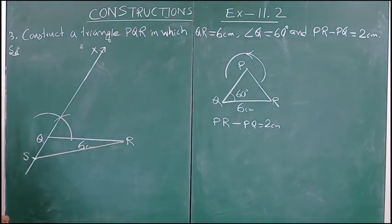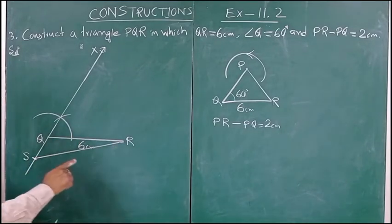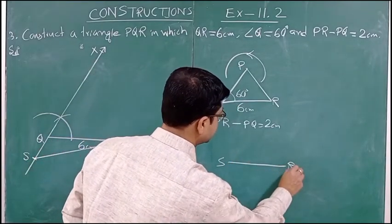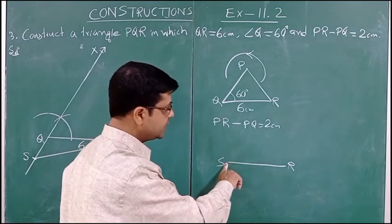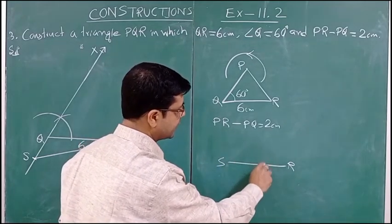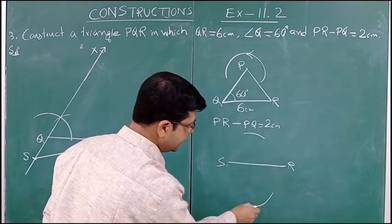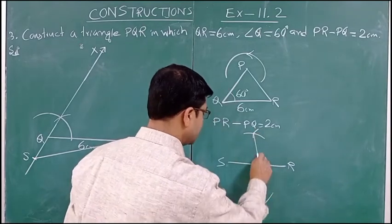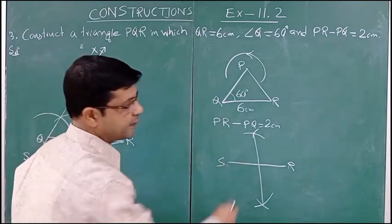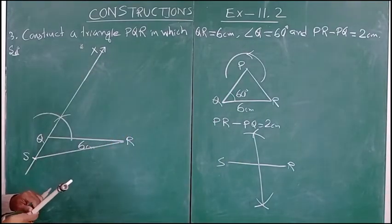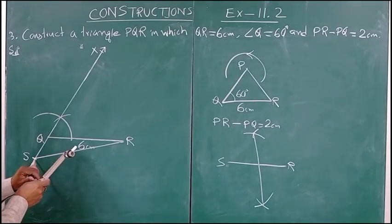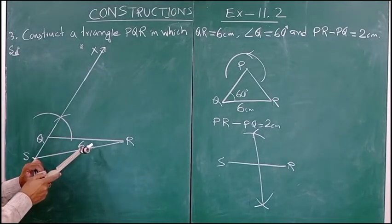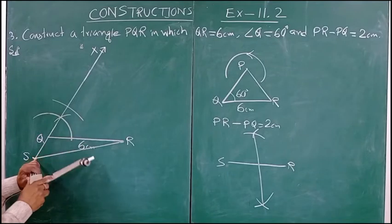Now SR is joined. The next step is to draw the perpendicular bisector of SR. You know how to construct a perpendicular bisector: take the compass, put it at S, take a radius more than half of SR, and draw an arc above and below it. Then, with the same radius, put the compass at R and draw one arc above and one arc below.